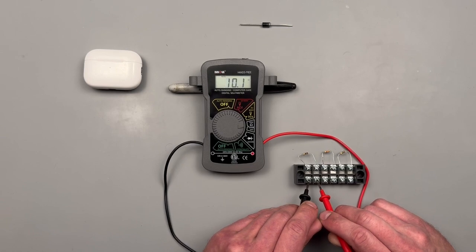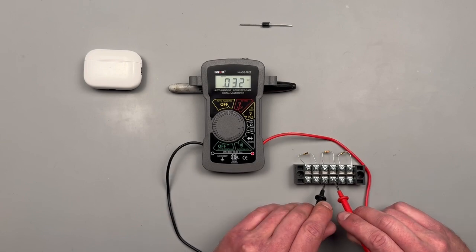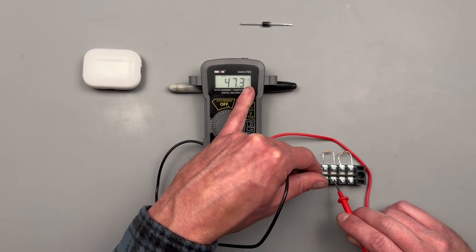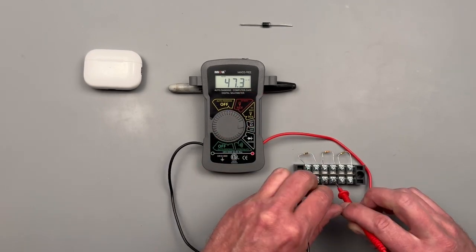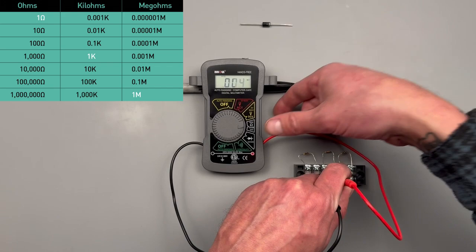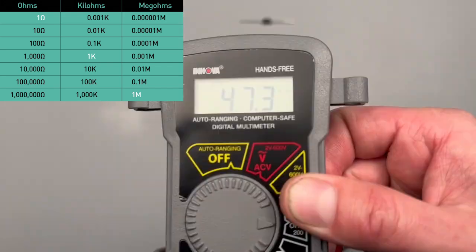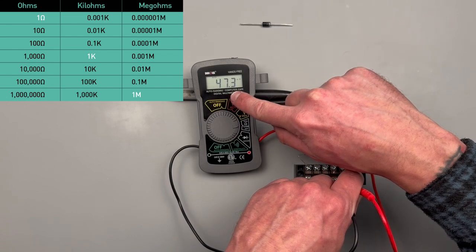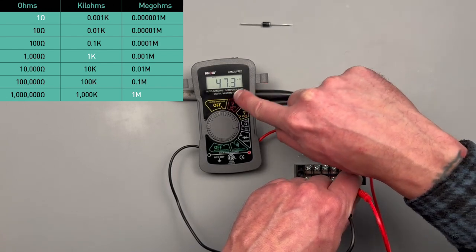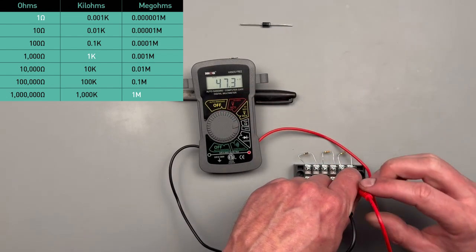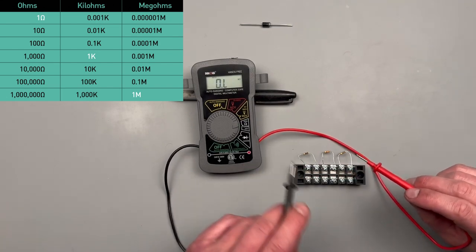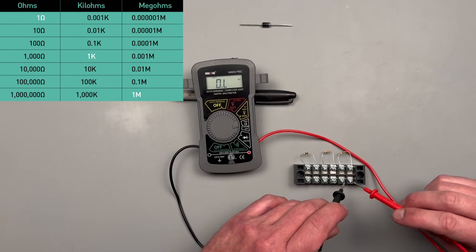This is coming back saying 10 ohms, 10.2. This one is coming back saying 47.3k ohms. The k in the right-hand corner means kilo - think of thousands. So we would carry our decimal point over three places. That would be 47,300 ohms. It says it's up to 20 mega ohms, so think of millions for mega.